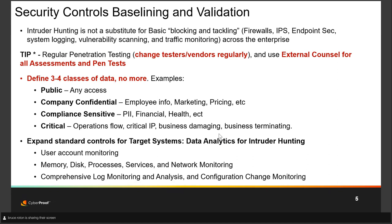Use external counsel for all assessments and pen tests when you can. This is particularly true for publicly traded organizations. It's a CYA move: if you use external counsel for pen tests and an attack happens before you've had time to mitigate, the evidence that you already knew those vulnerabilities existed is covered by client-attorney privilege and therefore non-discoverable.